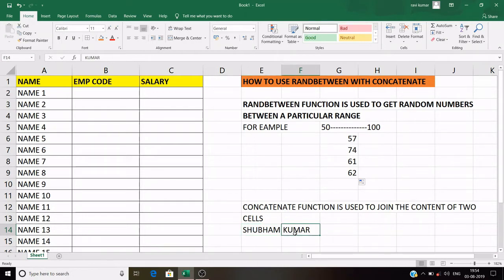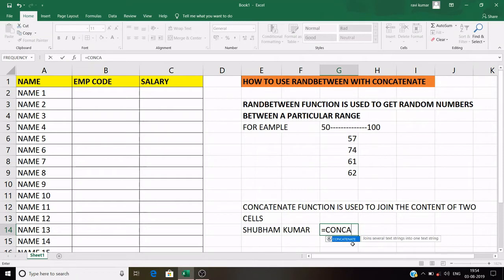For example, in one cell I have written Shubham, and in the second cell I have written Kumar, and I want the first name and the last name in a single cell. So I'll use CONCATENATE function. For example, equals to CONCATENATE. Our text one is Shubham, and now it's asking for text two, that is Kumar.